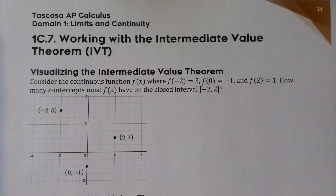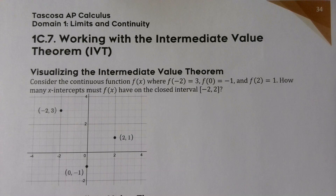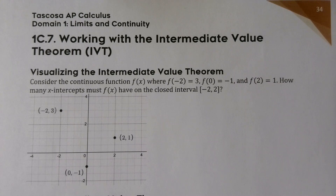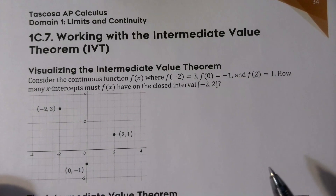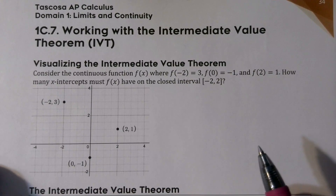Let's get into topic 1C.7. It's the final topic of domain 1, but it may be one of the most important things you're going to work with, especially in terms of getting ready for your AP exam. We're going to be working with what's called the Intermediate Value Theorem, abbreviated as IVT. Anytime you want to cite this theorem, you can abbreviate it as IVT. Unlike the Squeeze Theorem, whenever we use the Intermediate Value Theorem, you do have to cite it by its name, but you can abbreviate it IVT.